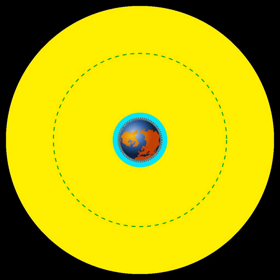Areosynchronous orbit, a synchronous orbit around the planet Mars with an orbital period equal in length to Mars sidereal day, 24.6229 hours. Areostationary orbit, a circular areosynchronous orbit on the equatorial plane and about 17,000 kilometers above the surface of Mars. To an observer on Mars this satellite would appear as a fixed point in the sky.